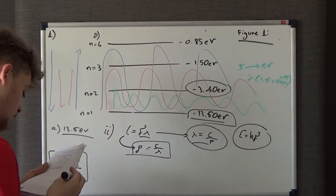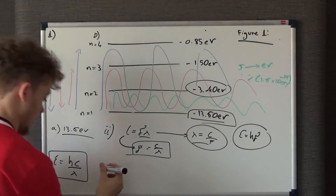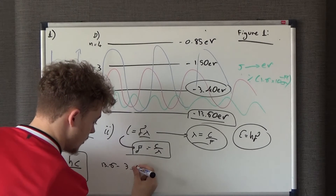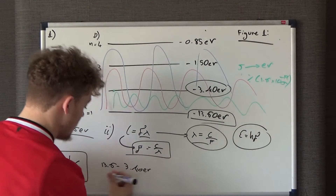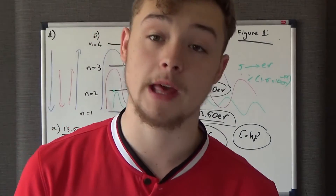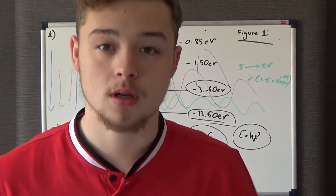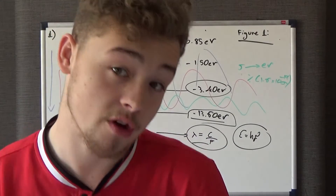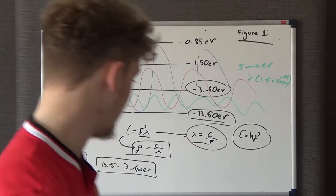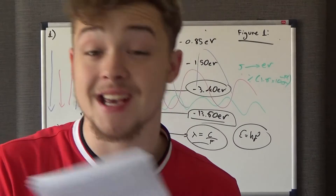To work out the energy change, we do 13.6 minus 3.4, which gives 10.2 eV. Both values are in eV, but for E=hf (or E=hc/λ), we need energy in joules. So we convert: 10.2 eV × 1.6×10⁻¹⁹ gives us the energy in joules, which we set equal to hc/λ.